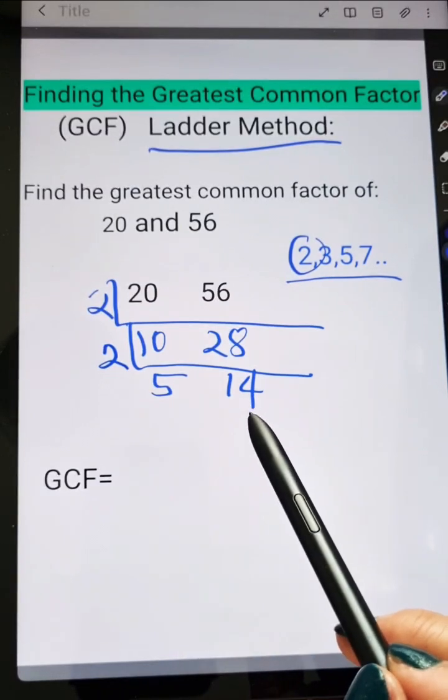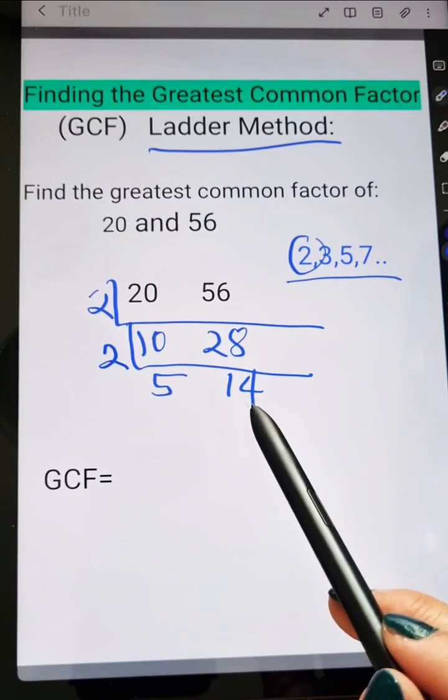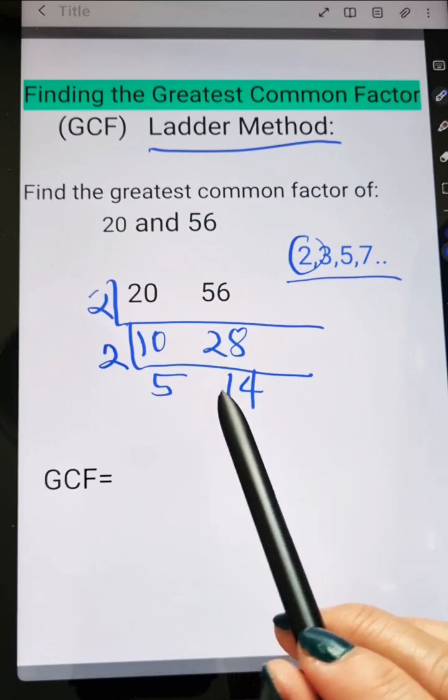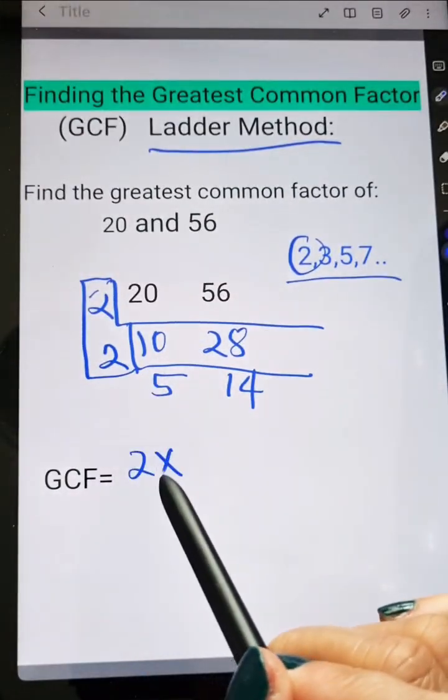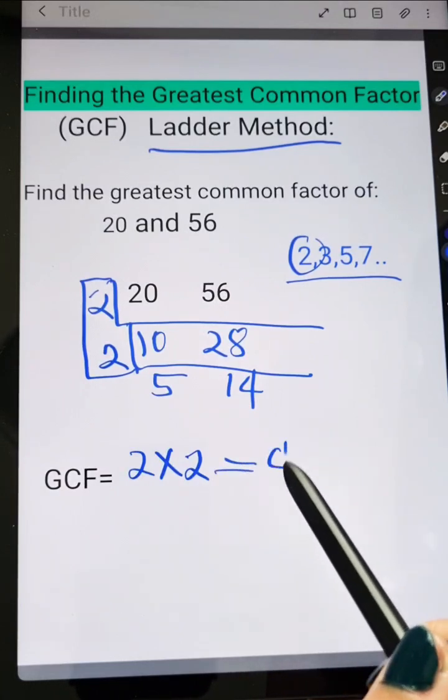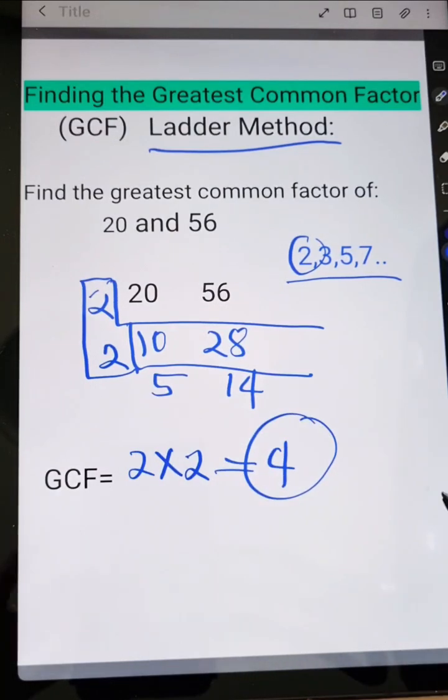Now for 5 and 14, they don't have a common factor anymore. So if that is the case, the numbers here on the side, you're going to multiply that. 2 times 2, that is equal to 4. That would be the GCF.